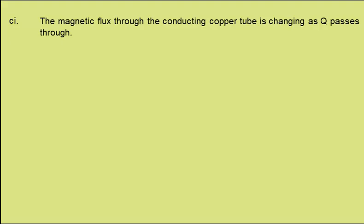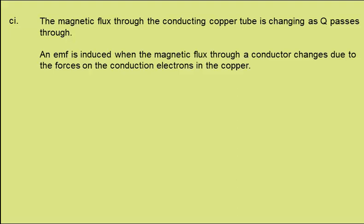In C, we're told cylinder Q is a strong permanent magnet. P and Q are released separately from the top of a long vertical copper tube, so they pass down the center of the tube, with the time taken for Q being much longer than the time taken for P. In C part 1, we're to explain why we would expect an EMF to be induced in the tube as Q passes through it. Well, the magnetic flux through the conducting copper tube is changing as Q passes through, and EMF is induced when the magnetic flux through a conductor changes due to the forces on the conduction electrons within the copper.